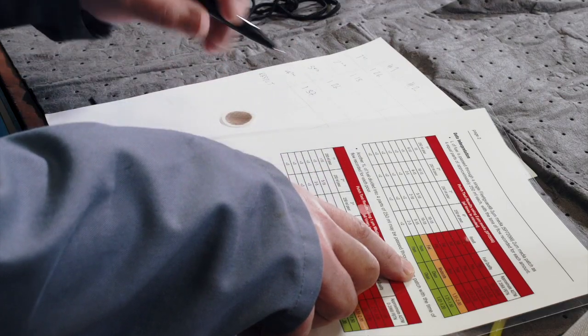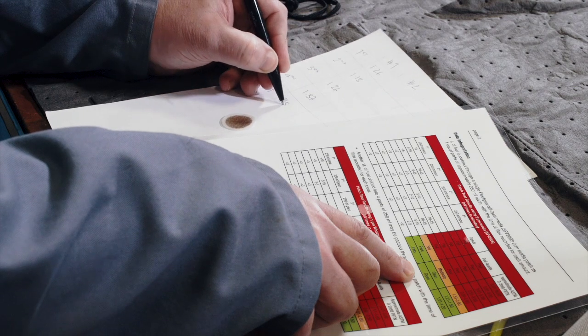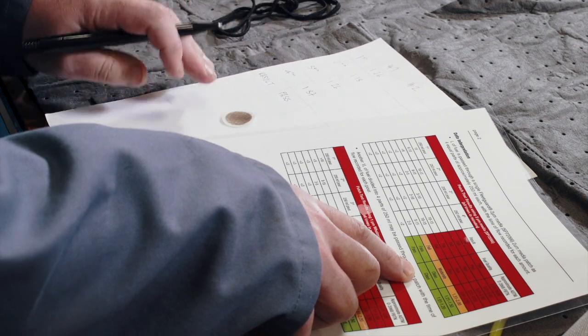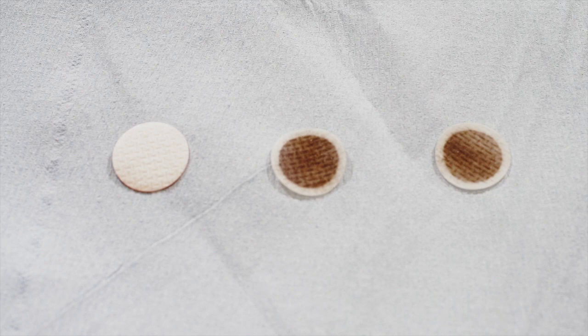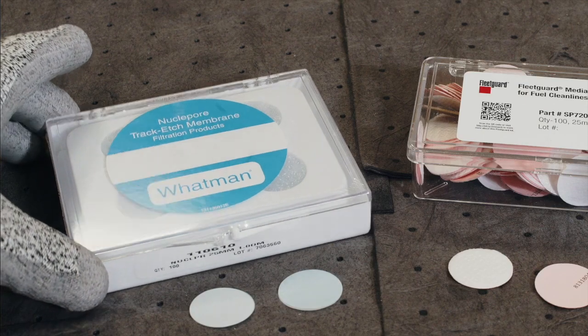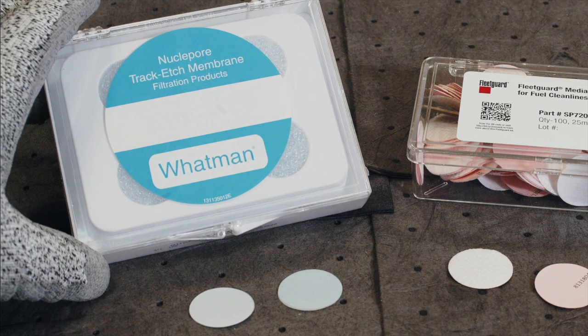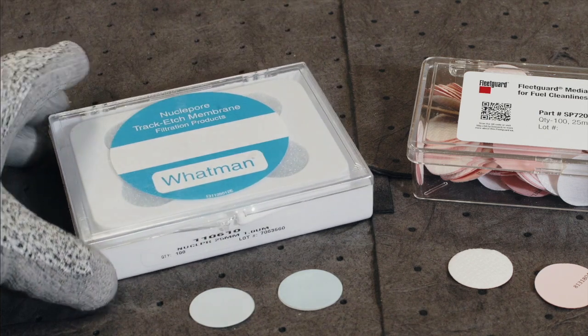Once you have the times for the pours, use the data interpretation card to assess the quality of the fuel. You can also inspect the media used during the test, and for the one micron media, if you place it in a ziplock bag, you can send it to a lab for further analysis.